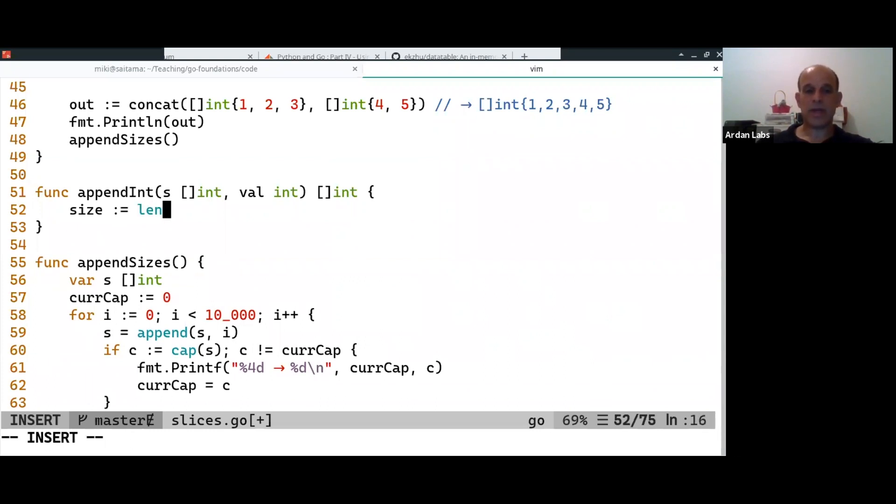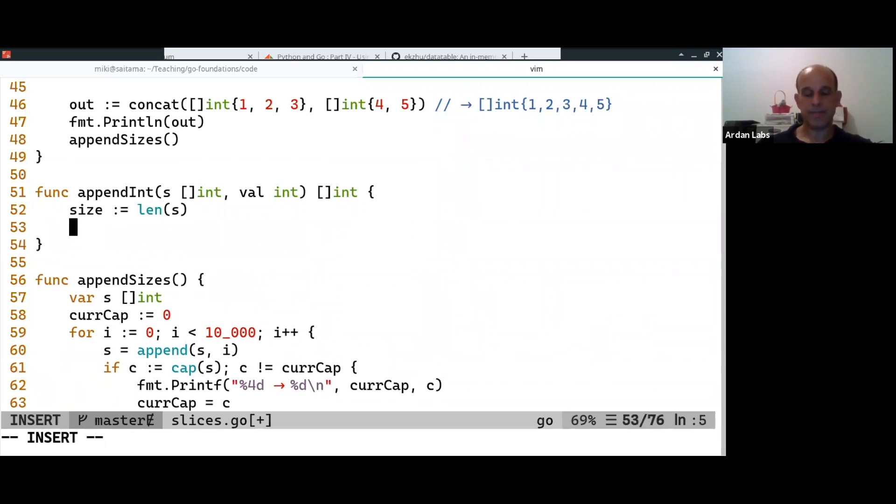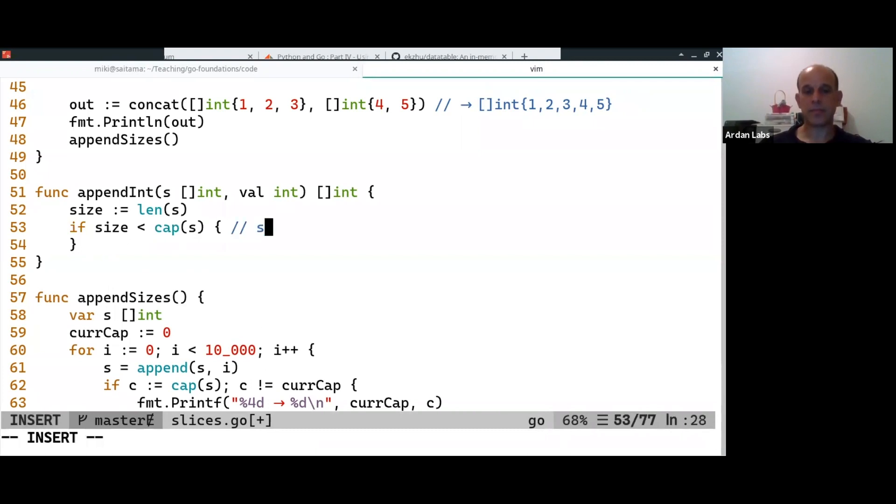So I'm going to say that the size is currently the length of s. And if the size is smaller than the capacity of s, it means there's space in the underlying array.